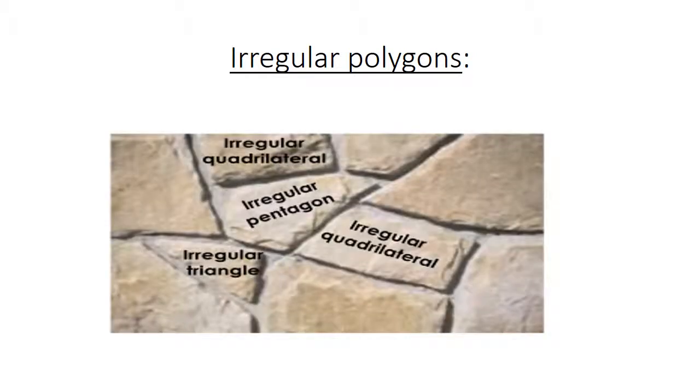Irregular polygons: Here are examples of irregular polygons. On top, an irregular quadrilateral. In the middle, there is an irregular pentagon with five angles. An irregular quadrilateral has four angles and four sides, and an irregular triangle has three angles and three sides.